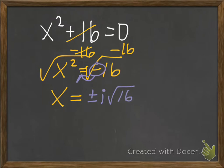Now I can take the square root of 16, which is 4, and I always write the number before a letter. So it's going to be x equals plus or minus 4i.